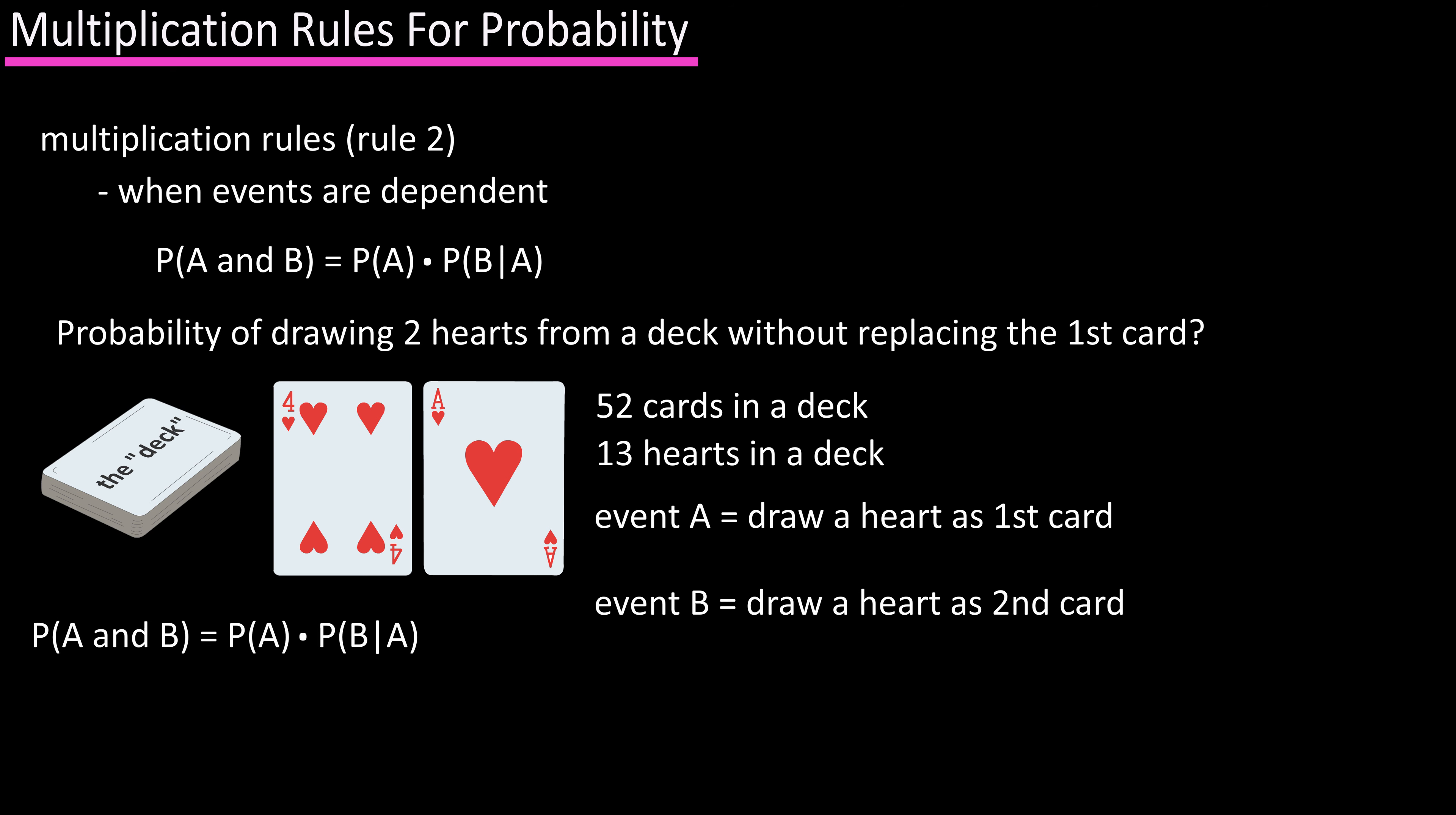So using our equation or rule, the probability of A and B equals probability of A, which in this case is 13/52, times the probability of B given that A has already occurred, which is 12/51.